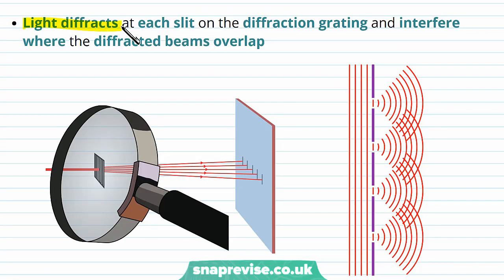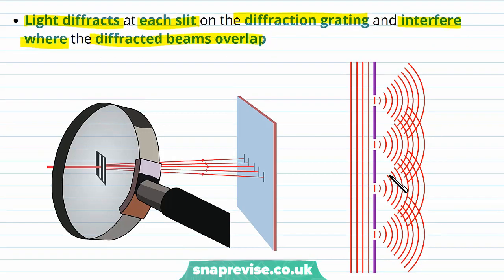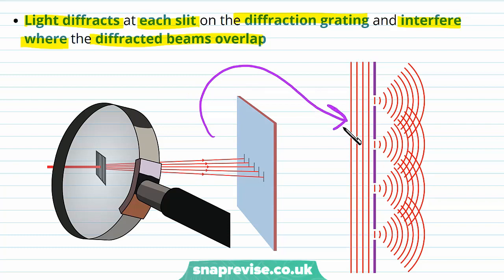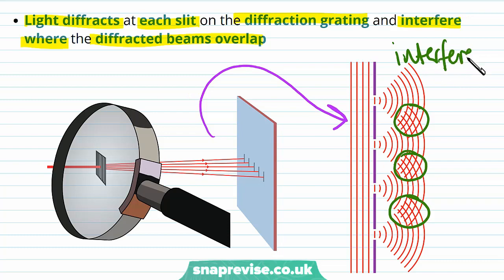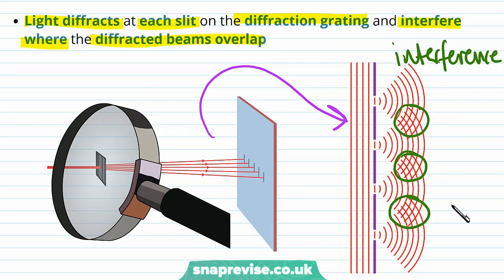The light diffracts at each slit on the diffraction grating and the diffracted beams interfere where they overlap. When light goes through a very narrow gap it diffracts, which is what happens at every single slit. The light waves spread out, overlap, and are able to interfere with each other — similar to what we saw with the double slit, except now we've got lots of tiny slits.